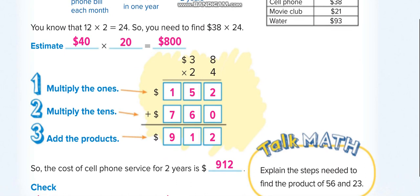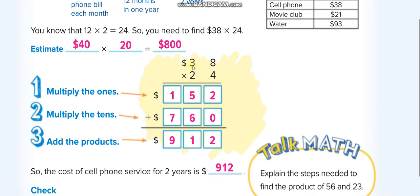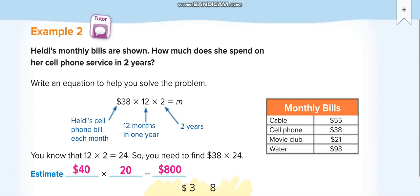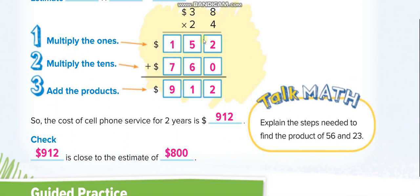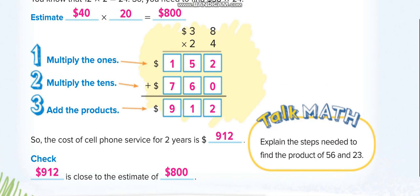Next question: 38 times 24. First, take 4 multiplied with both numbers up. 4 times 8 is 32 — write 2 down here and carry 3. Now 4 times 3 is 12, plus 3 is 15.